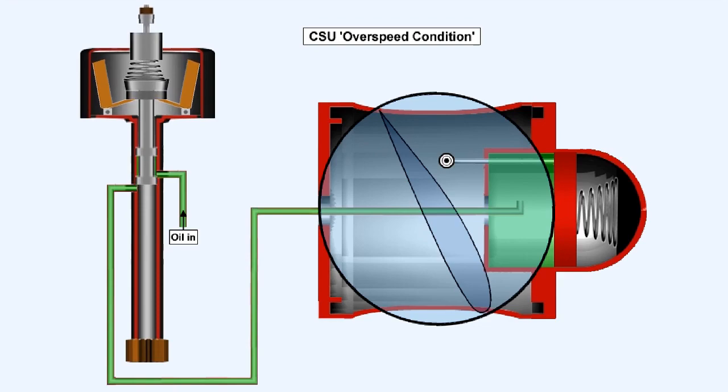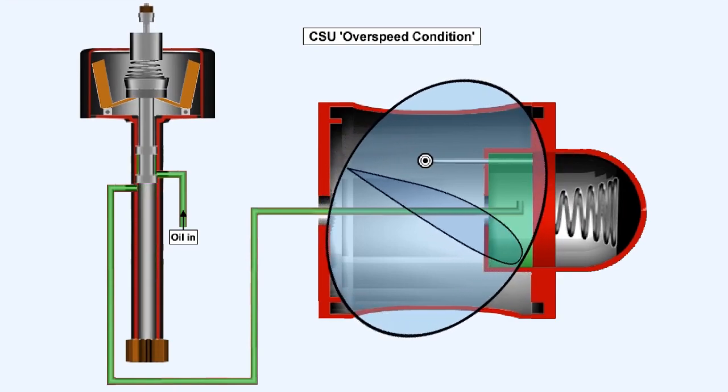If the propeller is over-speeding, then the flyweights will be forced outwards by centrifugal force, compressing the speeder spring, and allowing the landed valve to move upwards. This will allow oil to drain back into the engine system, as the piston is moved under the force of the spring, coarsening the blade pitch, causing an RPM decrease.